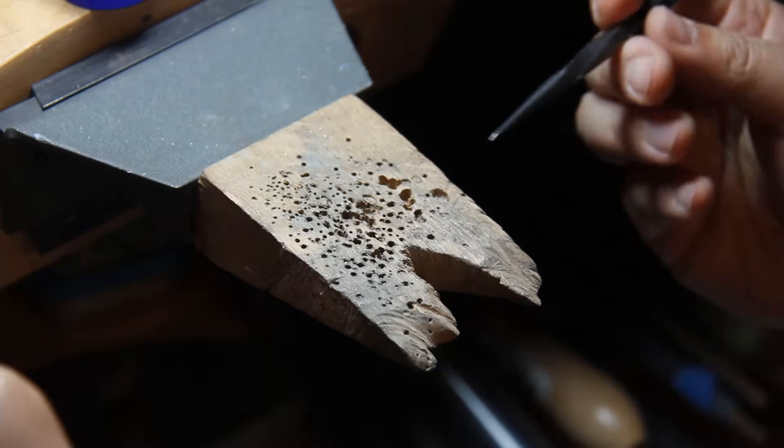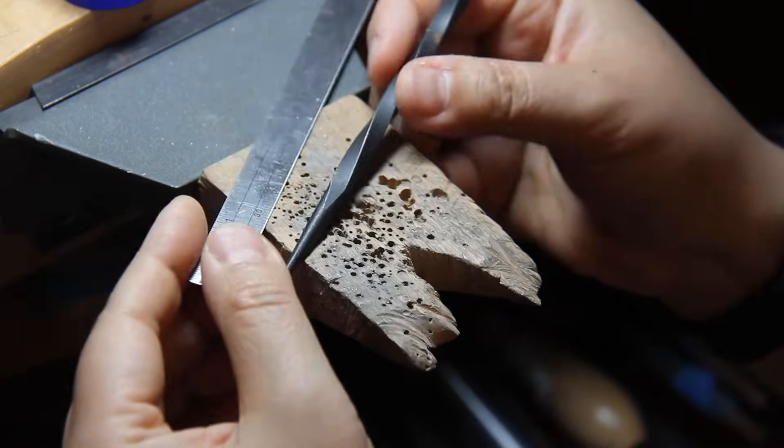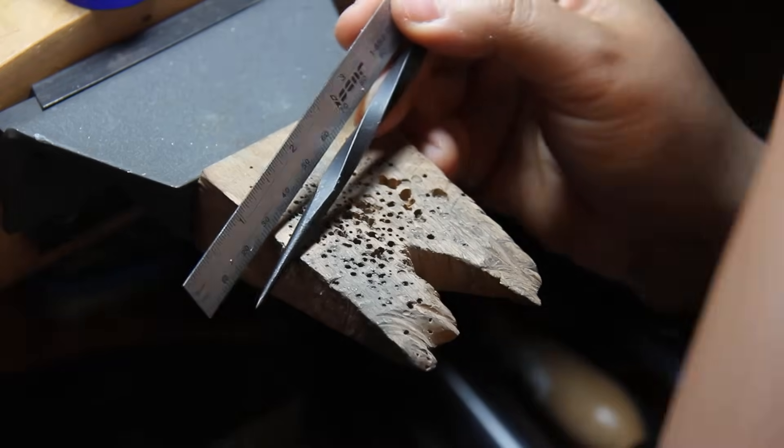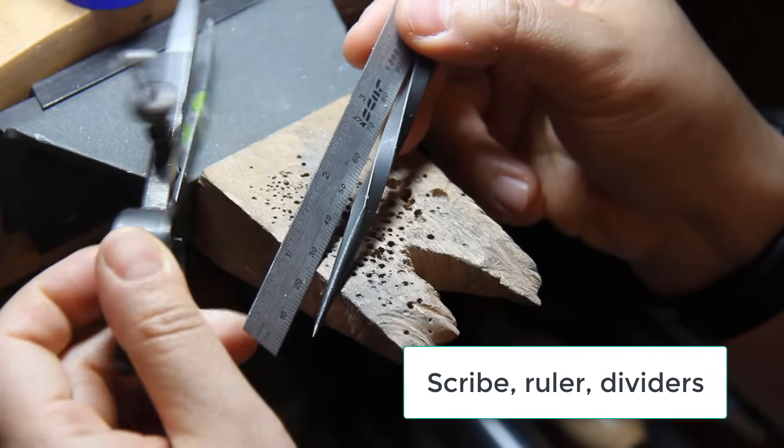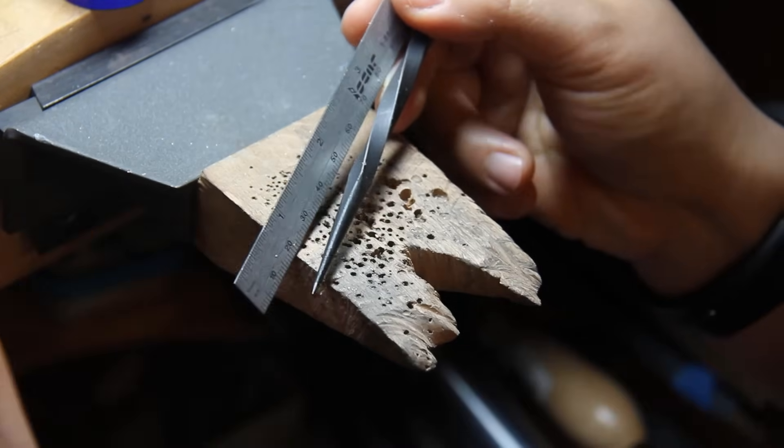To mark it precisely, we need a ruler, and also the scriber, and also the divider. So those are tools we are going to mark on the wax.